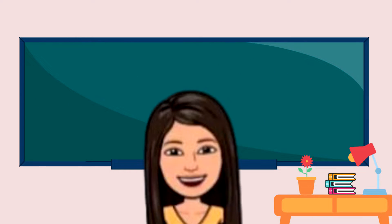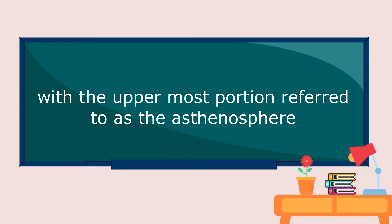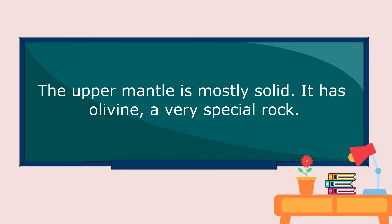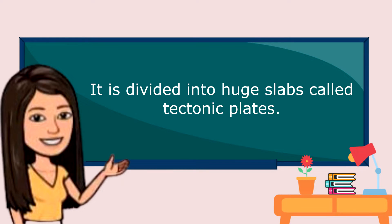Let's proceed to the upper mantle. Below the crust is the upper mantle, with the uppermost portion referred to as the asthenosphere. In addition to the lithosphere, it is divided into huge slabs called tectonic plates.